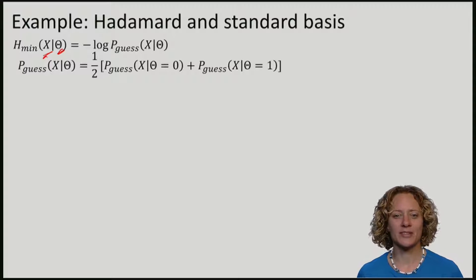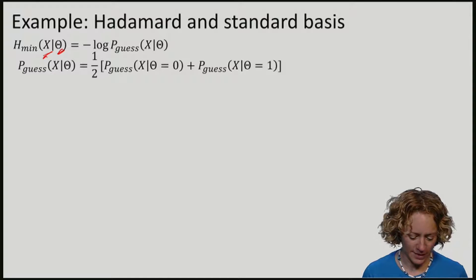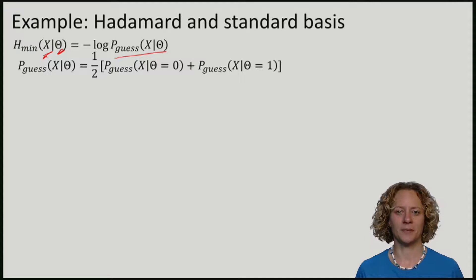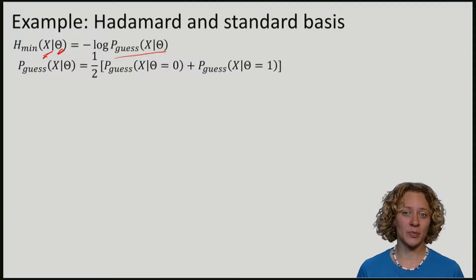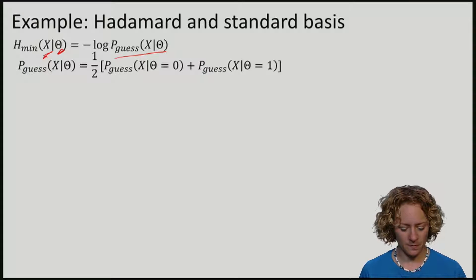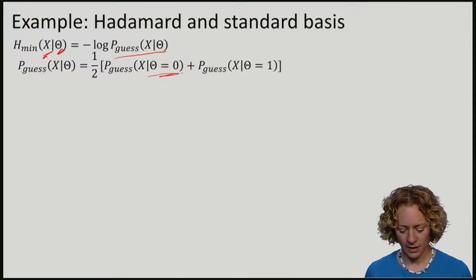Remember that this is just minus the log of the probability that Eve manages to guess X given theta. And we can expand this by averaging over the choice of the basis theta, theta being zero and theta being one.